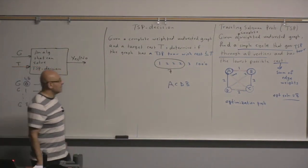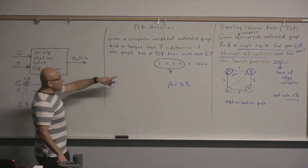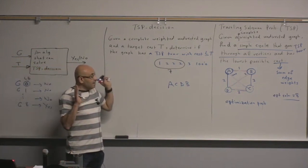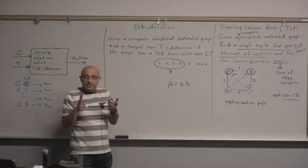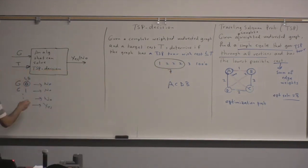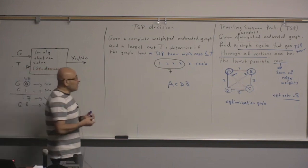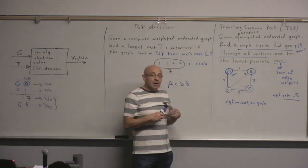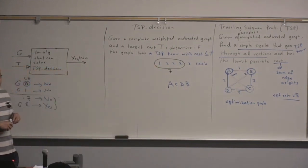The best tour will not have a cost lower than this, because it must have V edges and these are the lowest V edges — giving 7. So instead of starting from 0, we start from 7, skipping 0 through 6. T=7 gives no, T=8 gives yes, so we do it in just two iterations. The tighter our lower bound, the faster we solve this problem.